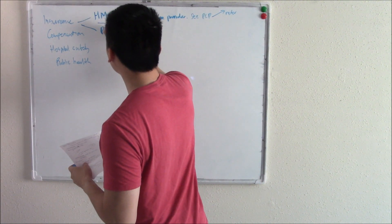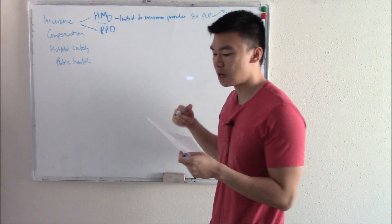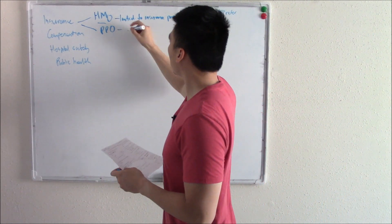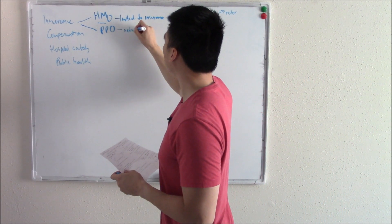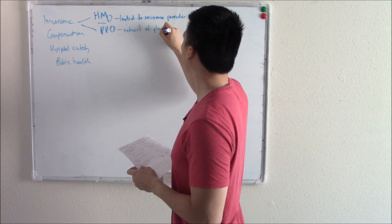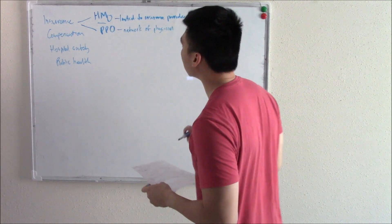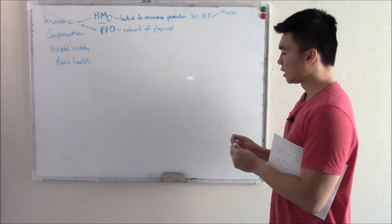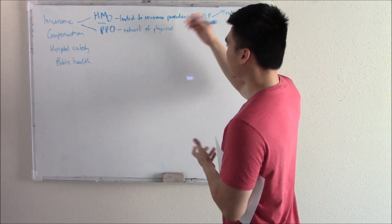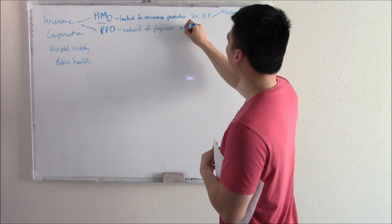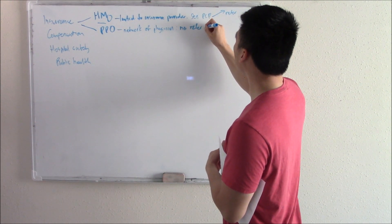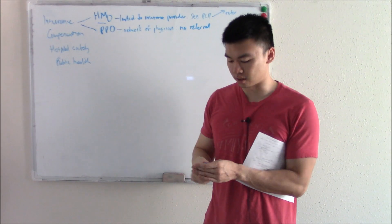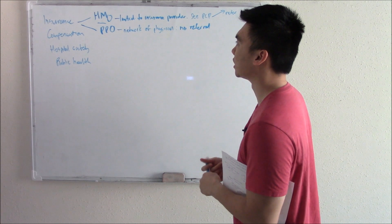Another type of insurance is PPO, probably a more common one. Preferred provider organization. Here you are given a network of physicians. And the good thing about this is if a specialist is in this network you can see them directly. No referral needed. So if you need to see a gastroenterologist and you look in your network and there's a gastroenterologist that you want to see, just go to them directly. No referral needed.